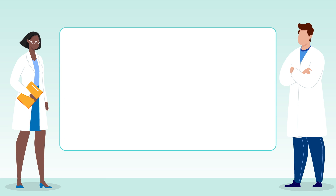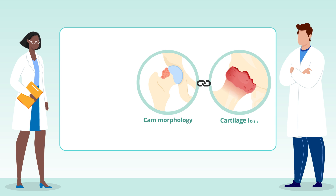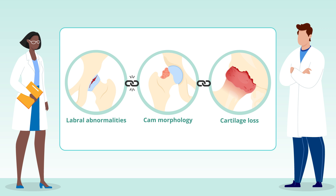These findings suggest that cam morphology developed during adolescence is associated with cartilage loss but not labral abnormalities, with generally mild severity in young adult athletes.